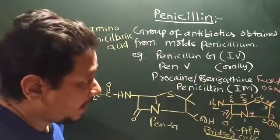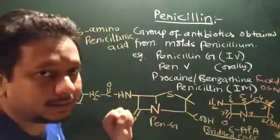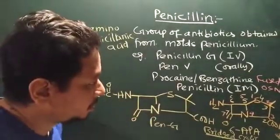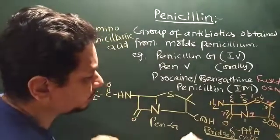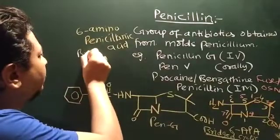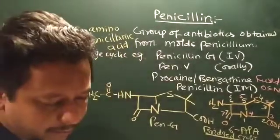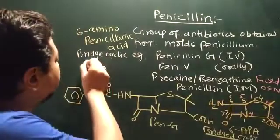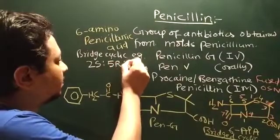So now after that, why I prefer 6-APA to synthesize all kind of penicillin derivative? Because the stereochemistry, the 6-APA, if I follow bridge cyclic, then the stereochemistry is preferred 2S, 5R, 6R.